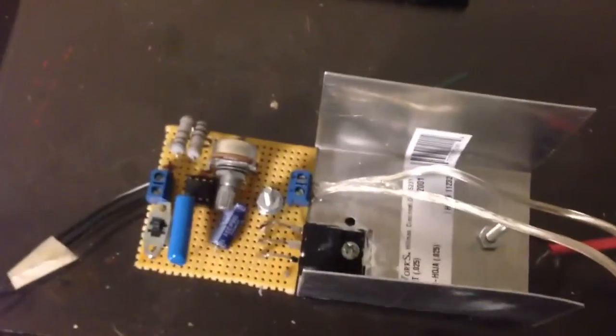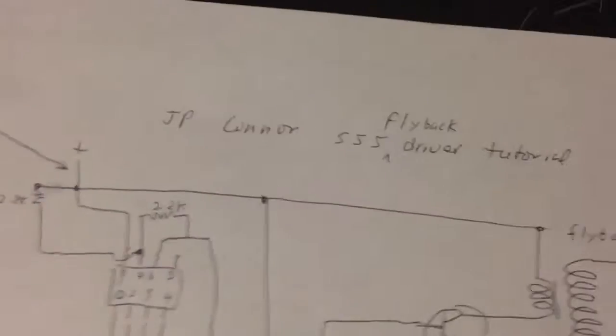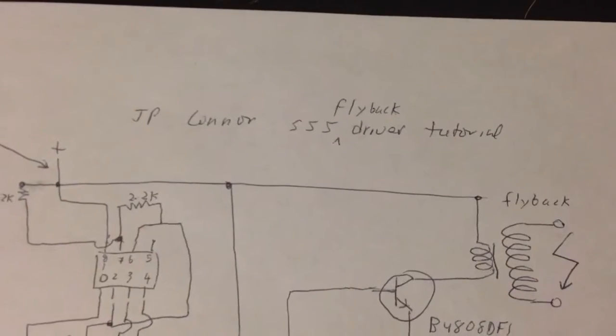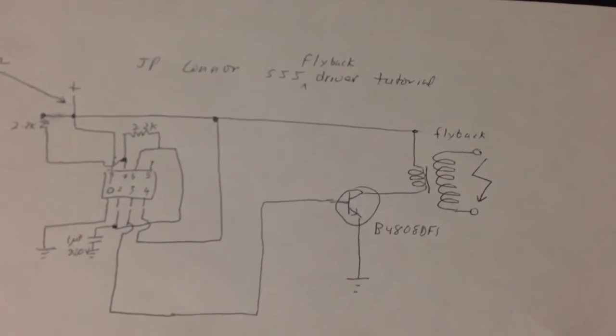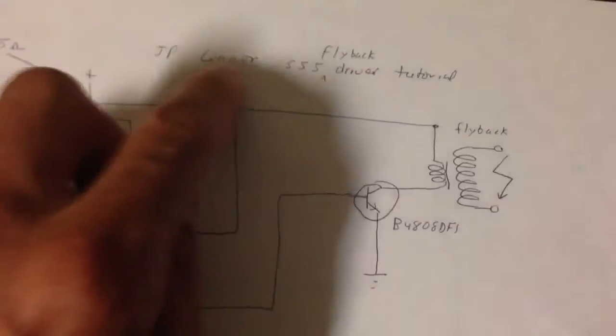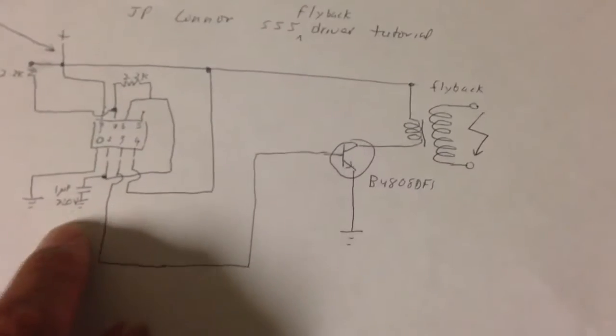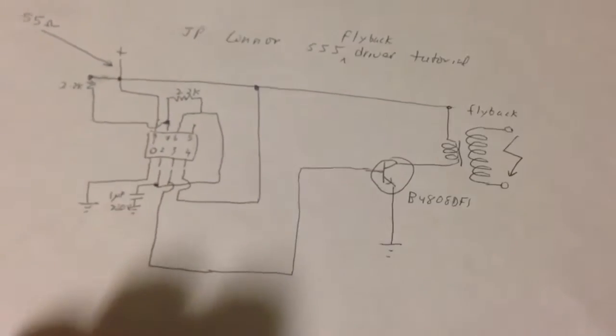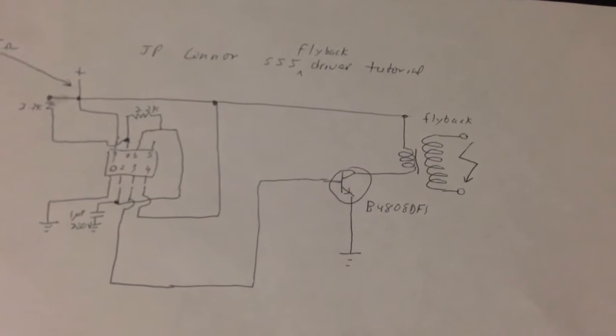This is my first attempt at a 555N flyback driver. And it's based on a tutorial on a YouTube video. It's J.P. Connor 555 flyback driver tutorial. And that's the circuit right there. That's the 555N timer right there. And I've got a 1 microfarad capacitor. And all the resistors in the circuit are 2.2 kilo ohms. And those determine the frequency and pulse width output of this setup.